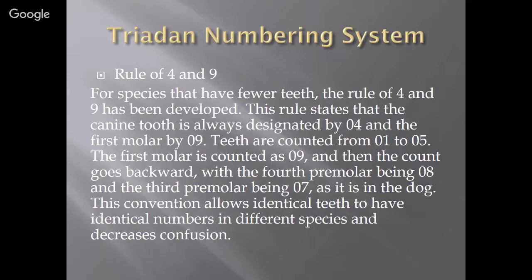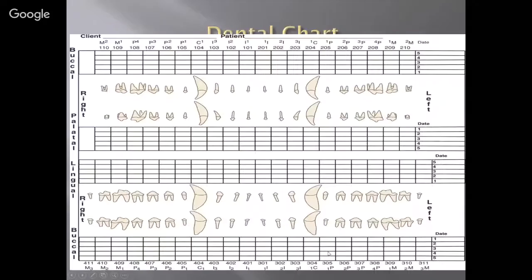Here it is as a chart — this is a chart you should be filling out for each patient when doing a dental cleaning. If there are lesions, deep sulcuses, missing teeth, or a tooth needs to be removed, this needs to be filled out appropriately. The chart has both the Triadan numbering system and the other system: I1, I2, I3, C1, P1, P2, P3, P4, etc.